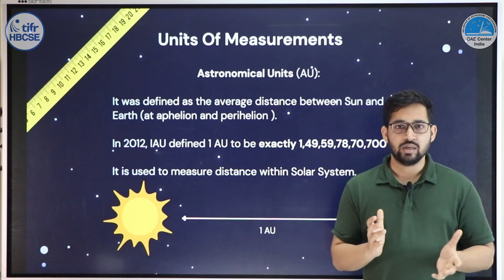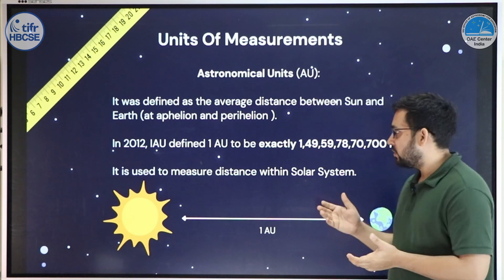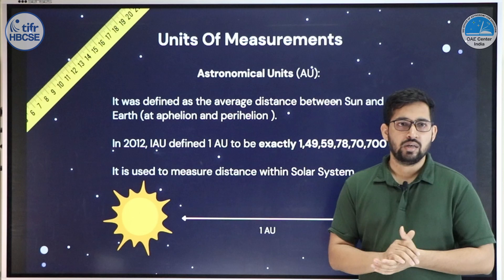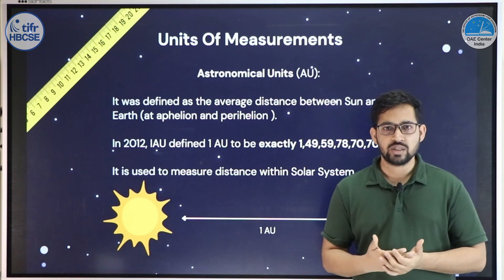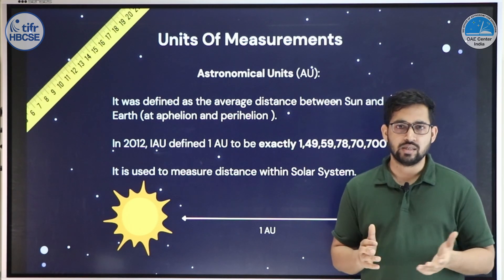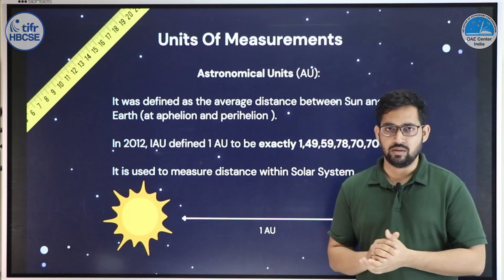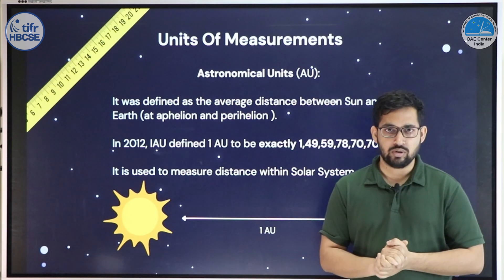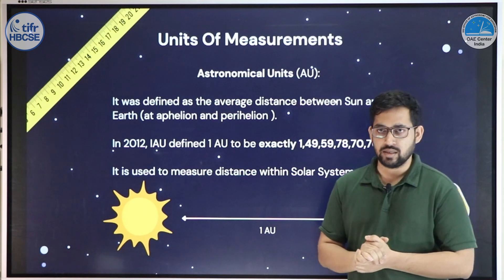But how we came up with this number, what's the importance of AU historically, why it was being used—that's a topic for another day. But whenever we talk about distances in solar system scale, other than Earth-Moon distance, almost all the distances—let's say Jupiter is roughly 5 AU from the Sun—this is how we report or tell what the distances are.